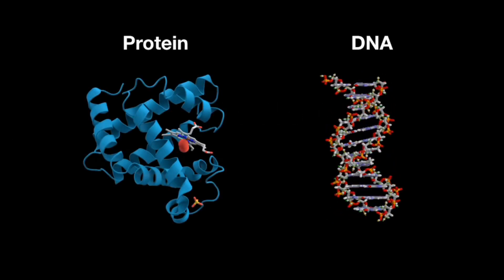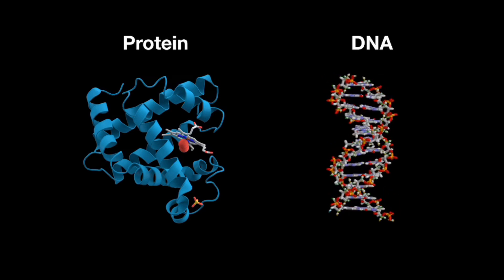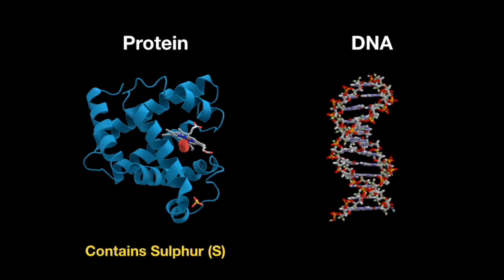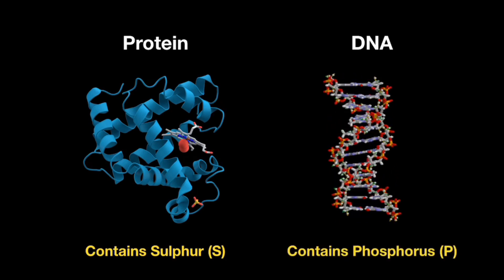In order to carry out these experiments, Hershey and Chase took advantage of the fact that sulfur is found in proteins but not DNA, while phosphorus is found in DNA within the sugar phosphate backbone.